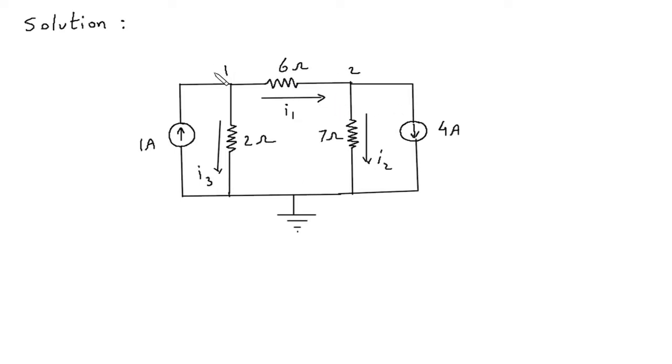Let's say this is voltage V1, voltage at node 1 is V1 and voltage at node 2 is V2.